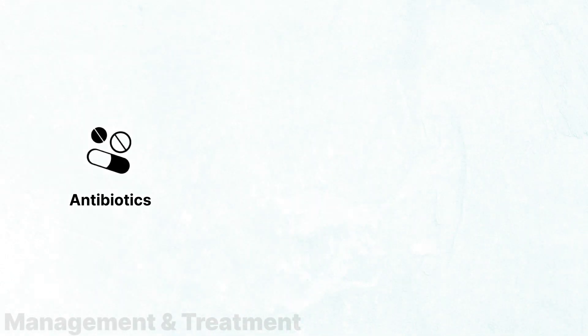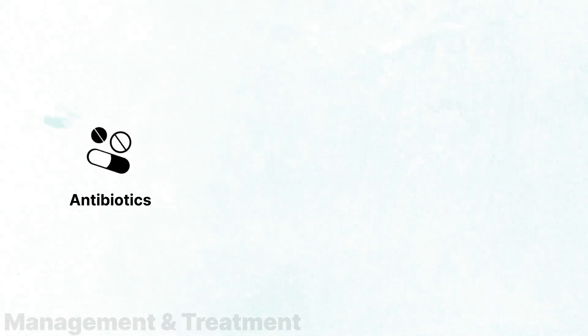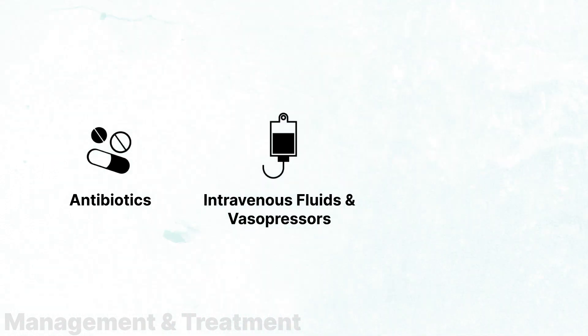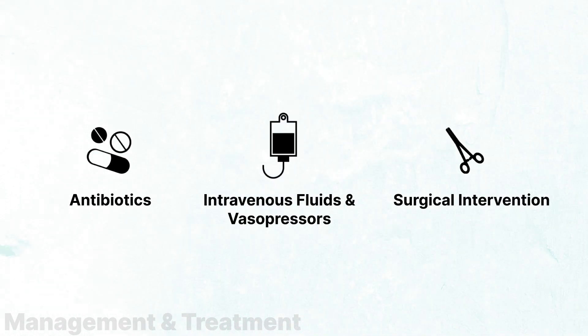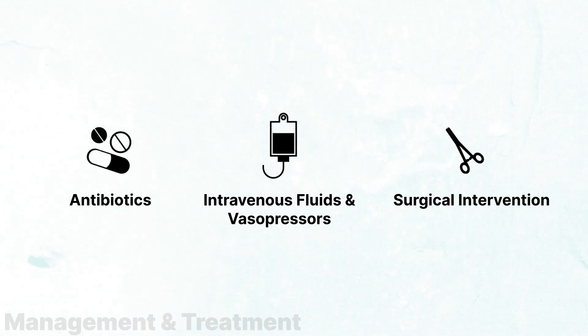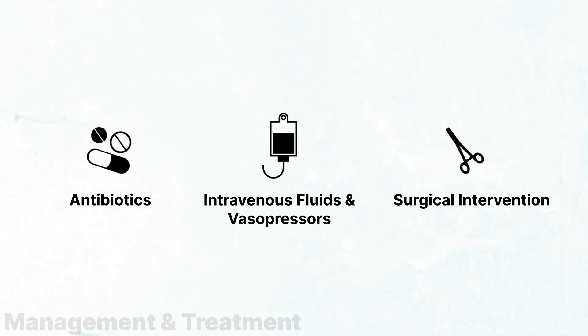The initial management of cholangitis includes prompt initiation of antibiotics and hemodynamic stabilization through intravenous fluids and vasopressor administration if it becomes necessary. Surgical and gastrointestinal intervention are also important, as emergent biliary decompression through ERCP or cholecystostomy placement may be necessary.